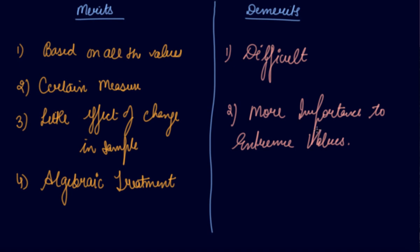In this video, we have learned about standard deviation, how to calculate variance from standard deviation, and then the coefficient of variation, also known as Karl Pearson's coefficient of variation. I hope you liked our video. Please download our Scholars Learning app and enjoy the learning experience with us. We'll see you in the next video.